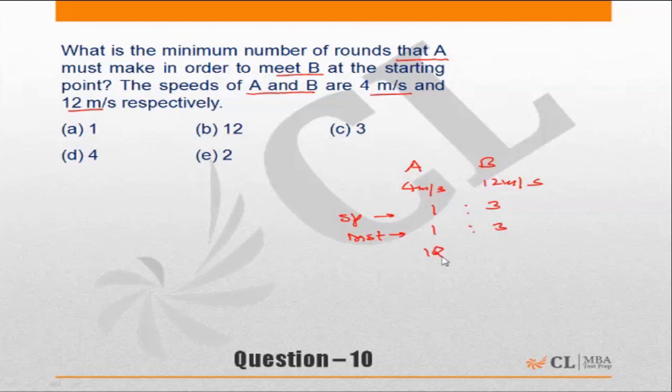In other words, when A completes one round, B would have completed three rounds. So A will need to complete one round to meet B at the starting point for the first time.